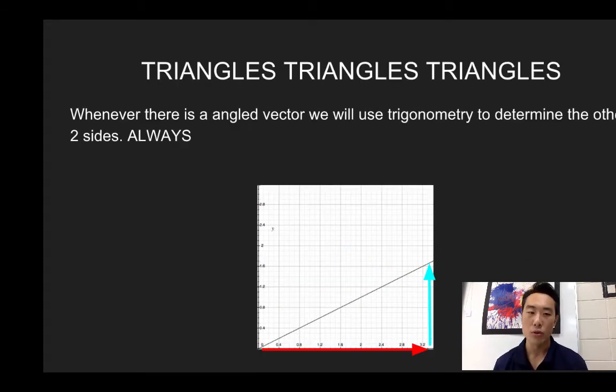Alright, triangles, triangles, triangles. Whenever there is an angled vector, we will use trigonometry to determine the other two sides, always. Now, sometimes you might not have all three sides, and so we need to figure it out. Or sometimes you'll have two sides and no angle, sometimes you have to figure that out. And don't worry, I'll get you right through it. Now, first things first, whenever we do this, we must always be using right triangles, or triangles with right angles. That's the very definition of a right triangle, or the correct triangle.